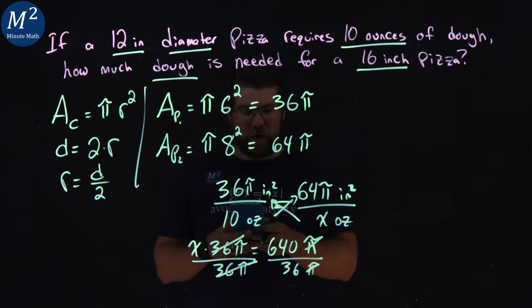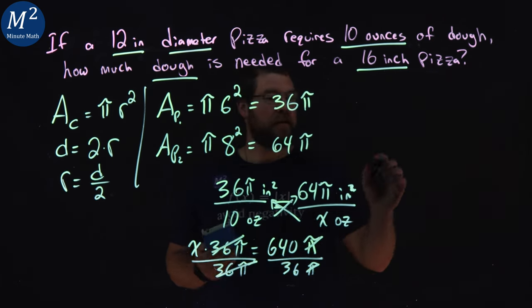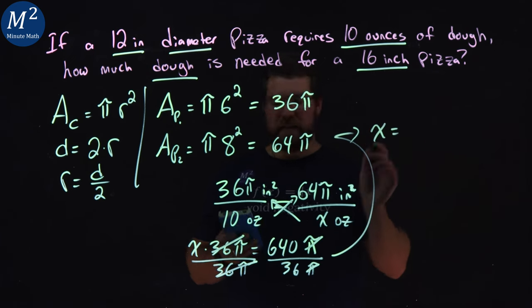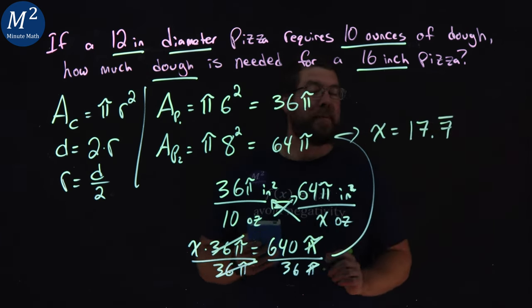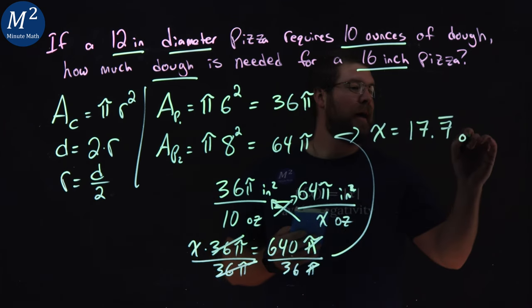And so, 640 divided by 36 comes out to be here. We have x equals, that's going to be a decimal, but 17.7 repeating, forever, ounces.